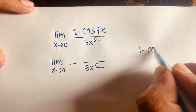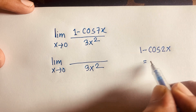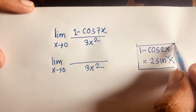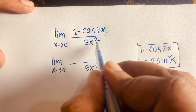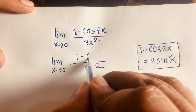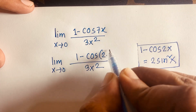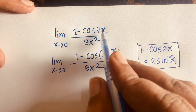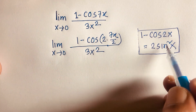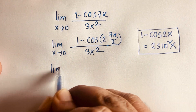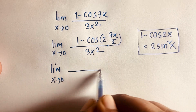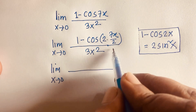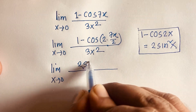We know that 1 minus cos 2x is equal to 2 sin squared x. So according to this rule, 1 minus cos 7x can be written as 1 minus cos 2 times (7x/2), and applying the identity it becomes 2 sin squared (7x/2). So the limit becomes limit x tends to 0 of 2 sin squared (7x/2) over 3x squared.